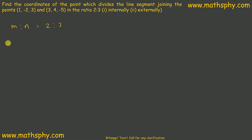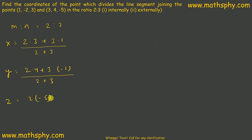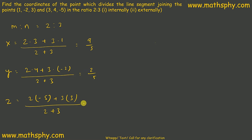The coordinate X will come out to 9/5, the Y coordinate will come to 2/5, and the Z coordinate will come to −1/5. So the point for internal division is (9/5, 2/5, −1/5).